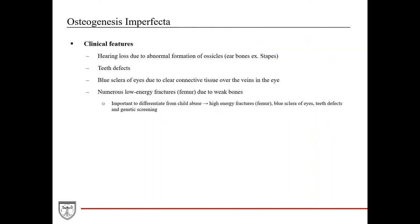Due to that weakness, clinical features include: hearing loss due to abnormal formation of the ossicles such as the stapes; teeth defects, because collagen type 1 is such an important component of tooth structure; blue sclera of the eyes, because the connective tissue of the sclera is composed mainly of collagen type 1 — when it's missing, you have clear connective tissue over the veins in the eye, producing that blue coloration; and numerous low-energy fractures due to weak bones.